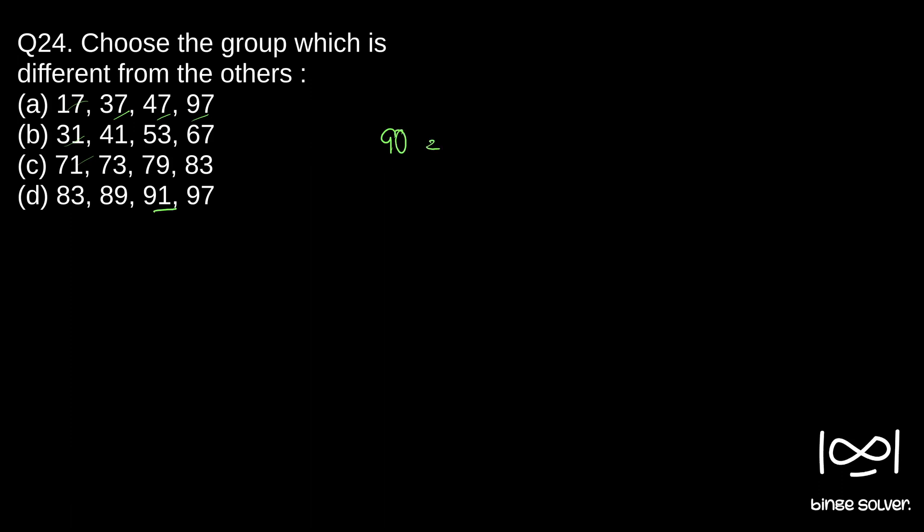So if you see 91, 91 is divisible by 7 - 70 plus 21 equals 91. So it is divisible by 7. So this is not a prime number.